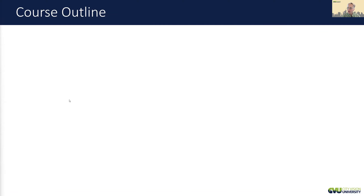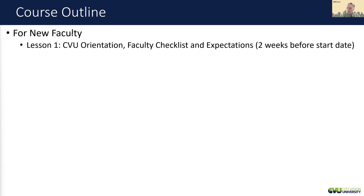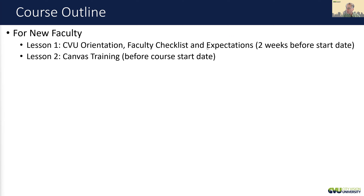In the course outline, some of the things that we're going to cover for new faculty — we're going to go through lesson one and cover City Vision University orientation, faculty checklist and expectations. We like for faculty to try to get this done two weeks before the start date. We're going to go through and do training in Canvas, which is our learning management system, and that's before the course start date.